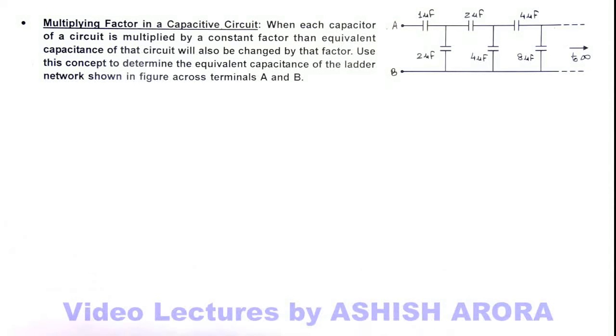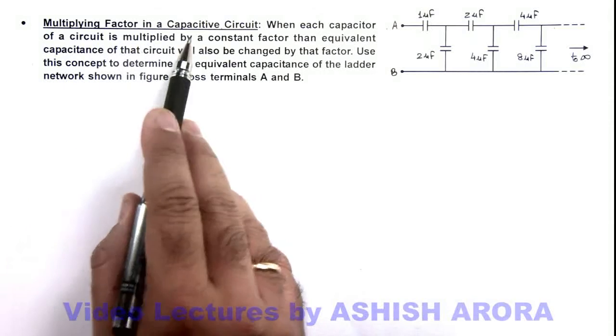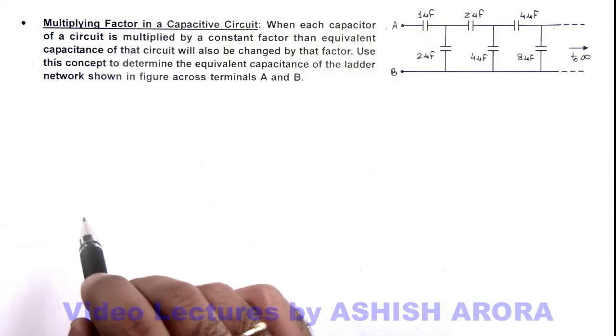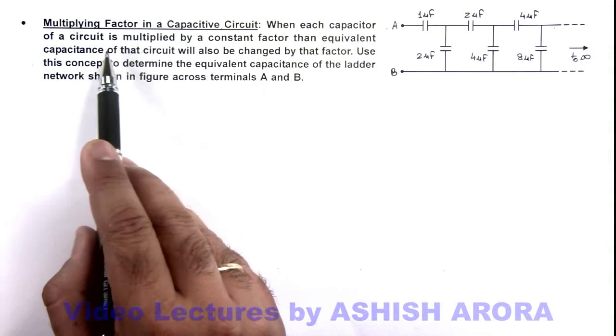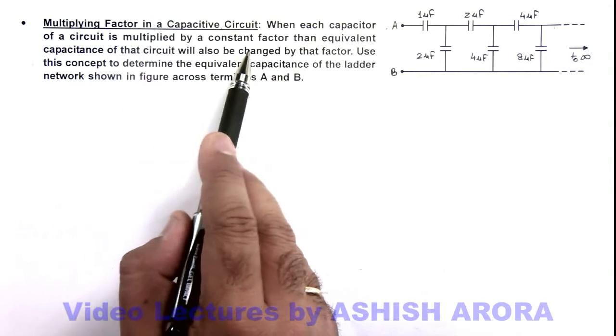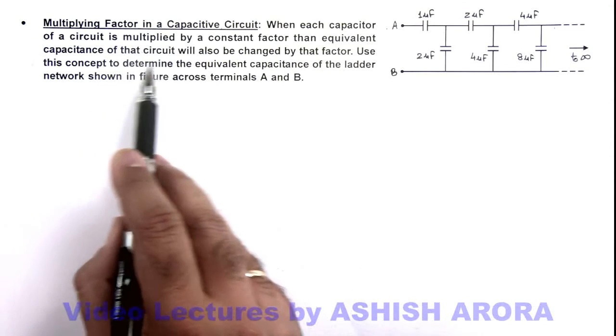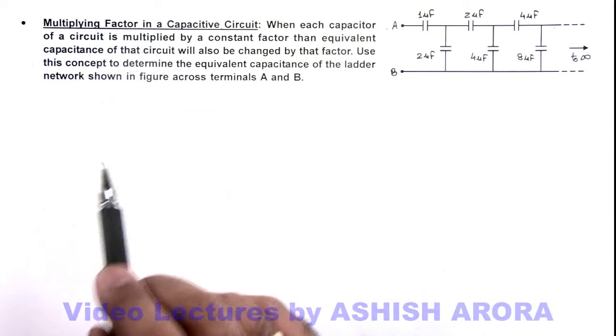In this illustration we'll study about a ladder network with multiplying factor in capacitances. Here, we are given that when each capacitor of a circuit is multiplied by a constant factor, then the equivalent capacitance of that circuit will also be changed by that factor.